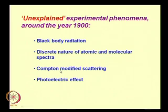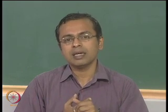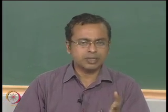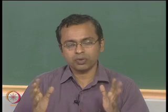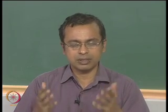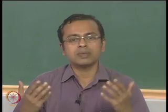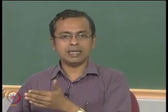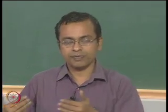That concept had no good explanation in terms of the general understanding of atoms and electrons existing at that point. Then there is something called Compton modified scattering. This came about as a result of experiments people did on how X-rays interacted with matter. Around the year 1923 it was discovered that X-rays which interacted with matter, when you examined the wavelength of the X-ray after the interaction, had a changed wavelength.